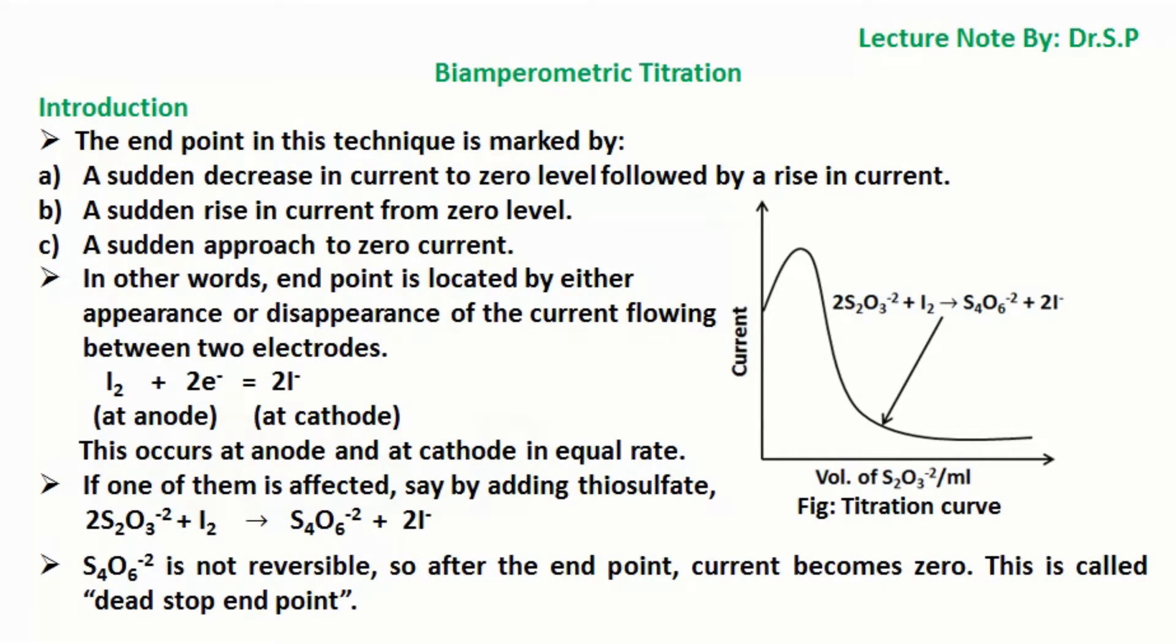Here, two molecules of thiosulfate react with iodine molecule to give tetrathionate anion and two molecules of iodide ion as shown in the equation. Before the end point, the current is due to reversibility of redox reaction, and after the end point the current is zero as only one species can take part in chemical reaction. A simple illustration of titration curve in bi-amperometric titration is shown here.